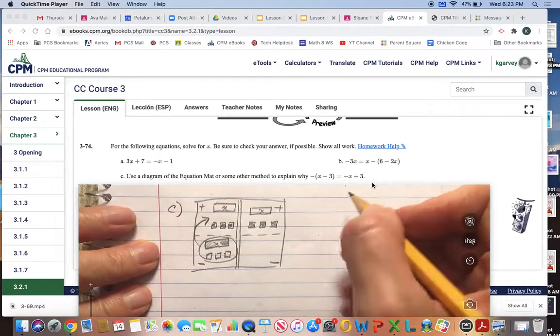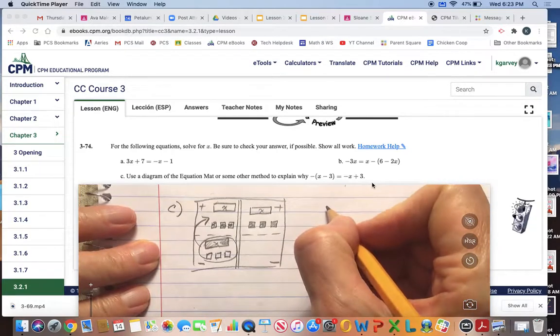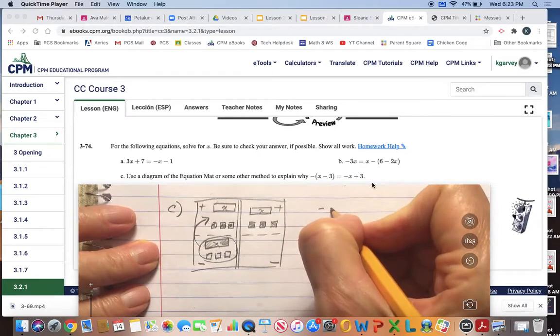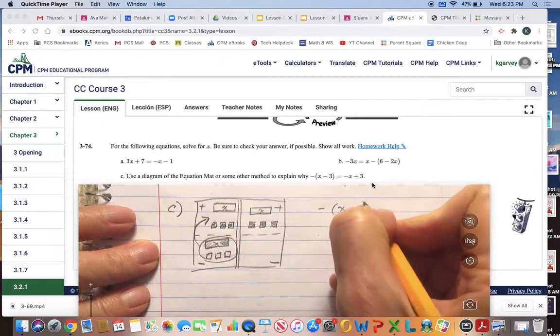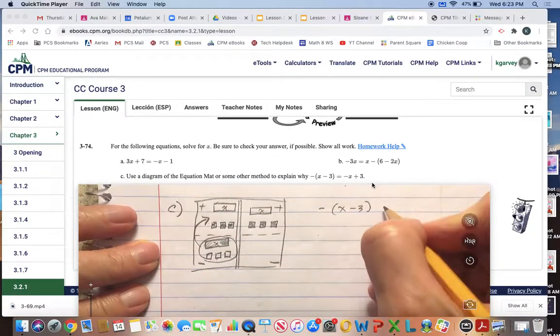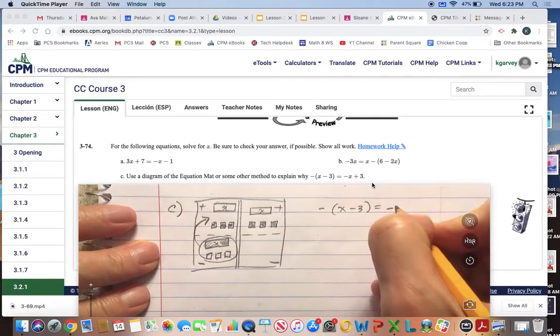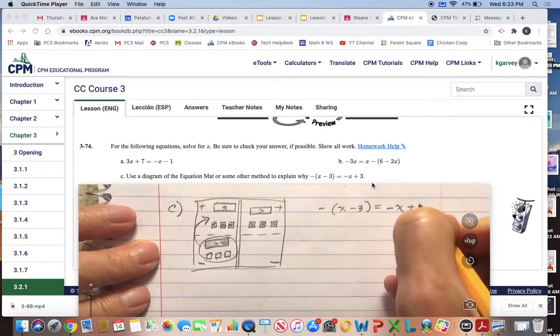The other way is to show it on paper. So negative x minus 3 is equal to negative x plus 3.